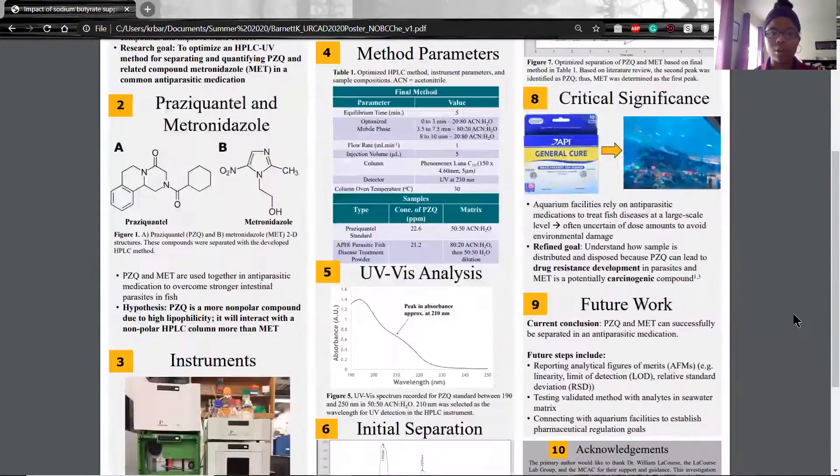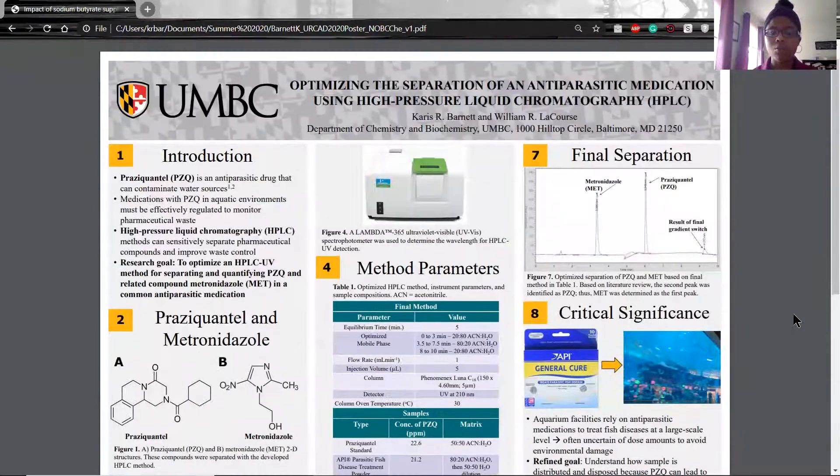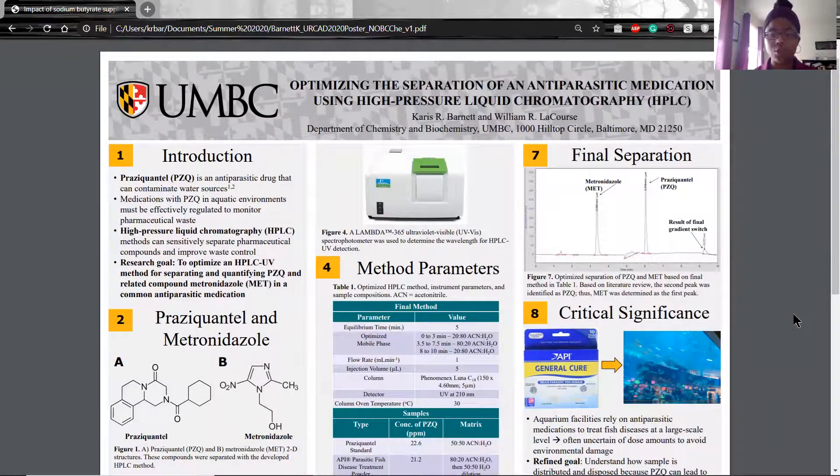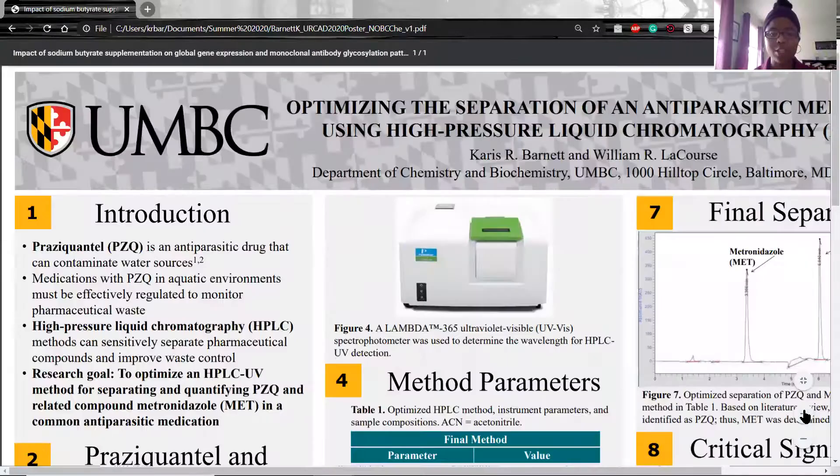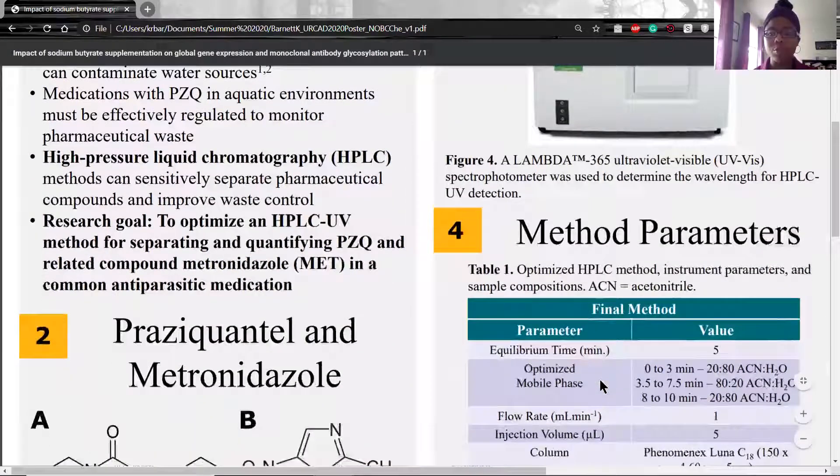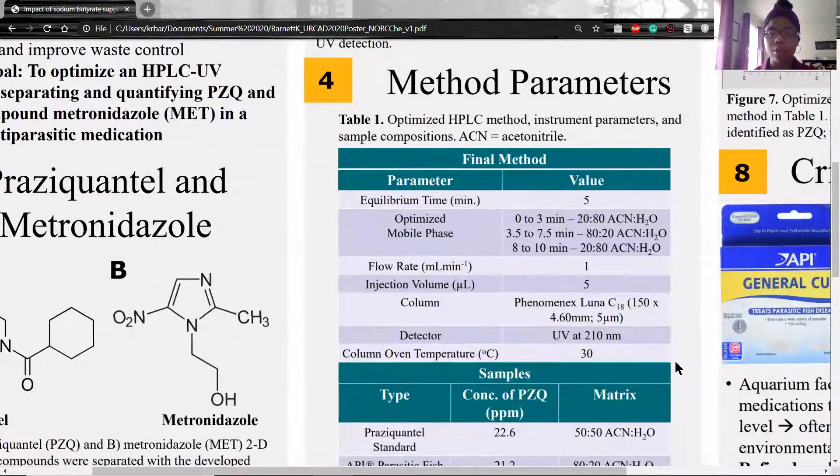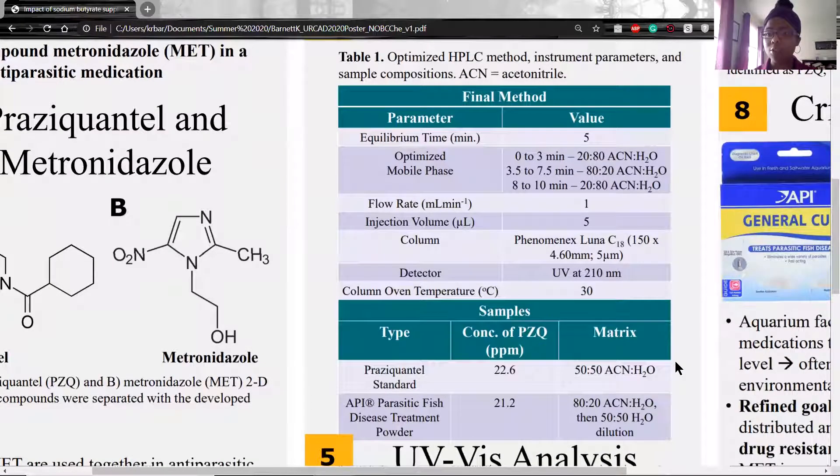In section 3, on the far top in the middle column, we see the two instruments used in this research project. In section 4, we see the method parameters used for the HPLC, and the important thing to know here is that a non-polar column was used, and the overall method time was 15 minutes.